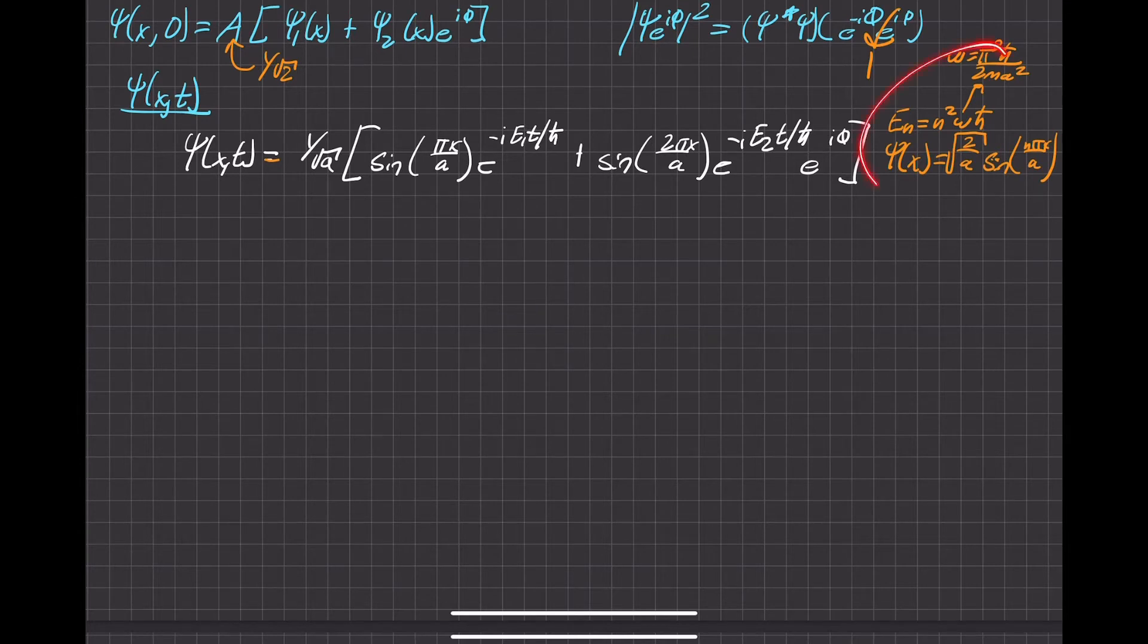You can follow that in the video for problem 2.5. But we used all this stuff to simplify this even more, which I'll write out here. 1 over square root of a, and then sine. We took an exponential out in the front.